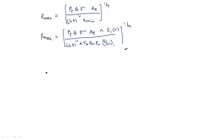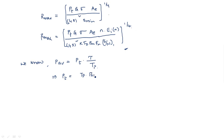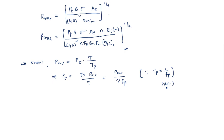Now, how can transmitter power be converted into average power in this equation? We know that P_average equals P_t multiplied by tau divided by T, or simply T_p. From this, P_t equals T_p times P_average divided by tau, or equivalently P_average divided by tau times F_p, since T_p equals 1 divided by F_p, where F_p is the pulse repetition frequency.